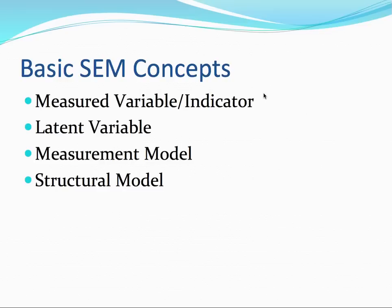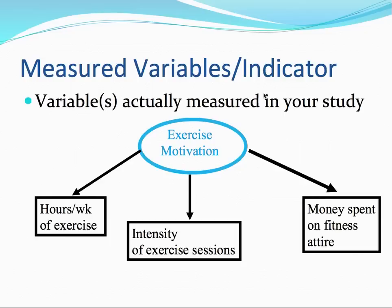Over the next few slides, we're going to discuss the basic concepts related to structural equation modeling. These consist of what we call measured variables or indicators, latent variables or constructs, our measurement model, and our structural model. Measured variables, also known as indicators or observed variables, are the variables that we actually measured in a particular study — for example, the particular items on a questionnaire. In structural equation models, indicators are represented as boxes or rectangles. In this slide we have three indicators: hours per week of exercise, intensity of exercise sessions, and money spent on fitness attire.